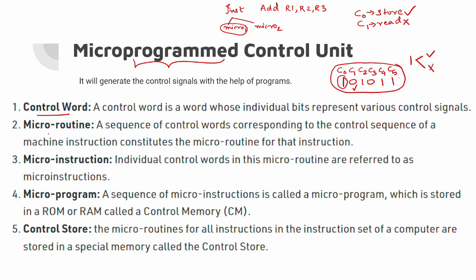Next term is micro routine. A micro routine is a sequence of control words — control word 1, control word 2, control word 3, and so on. So a micro routine is a sequence of control words that together carry out a specific operation.